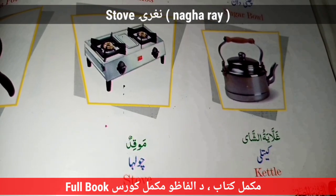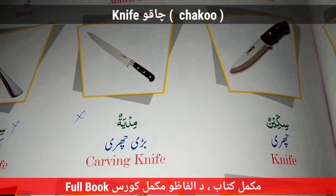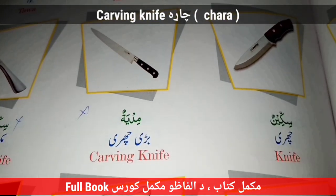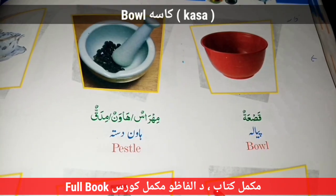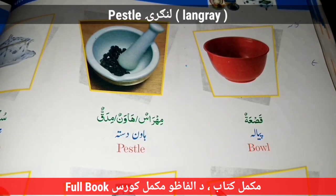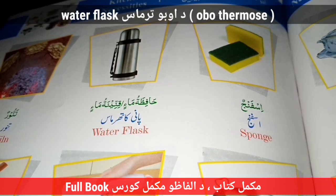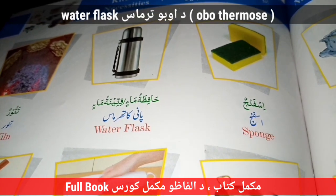Frying Pan — Arkara. Glass. Knife — Chaku. Carving Knife — Chara. Jug. Handwashing Pot — The Last Winsolo. Lohe Ball — Kasa. Pistol — Langaray — Ya Chatu. Sponge. Water Flask — Daubo. Thermos.